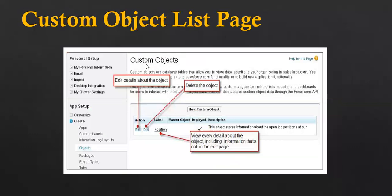This is a picture of the custom object list page. Whenever you create custom objects, this is how that object will be visible. You can click on the label to view, edit, or delete the information. If you watch the demonstration of how to create custom objects, you will understand this slide better.